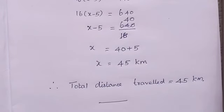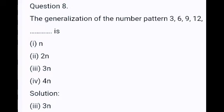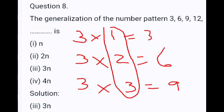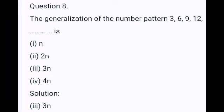I hope you understood this sum, students. Now, objective type questions. Question number 8: The generalization of the number pattern 3, 6, 9, 12, dash. Here, the numbers are the multiples of 3 — 3 ones are 3, 3 twos are 6, 3 threes are 9, 3 fours are 12, like that. Here, 3 is the fixed one. For the remaining 1, 2, 3, we can write any variable n. So, the answer is 3n.